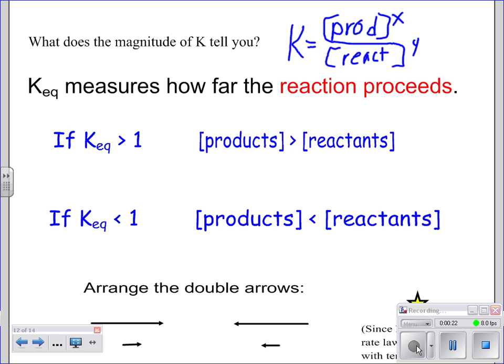Just like you would think, if you see a value where K_eq is greater than 1, it means you have a lot of products in your numerator, so your products are going to be greater in concentration than your reactants. And if your K value is less than 1, it means that you've got more of your reactants, more of what's in your denominator.